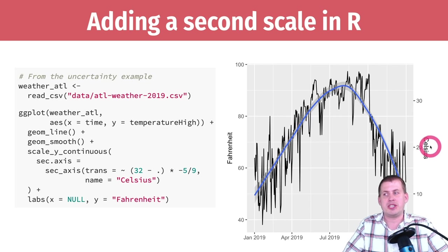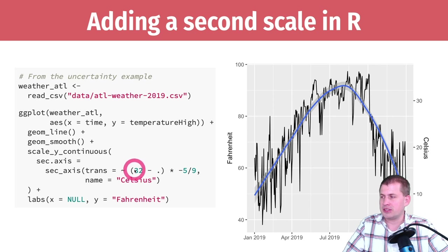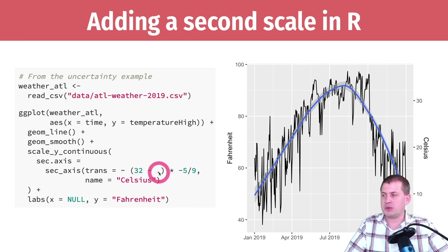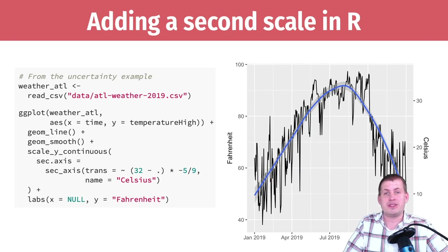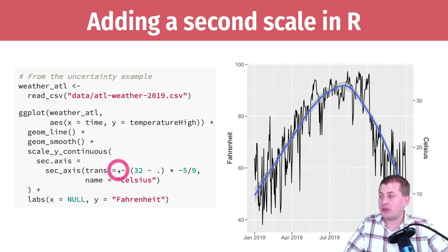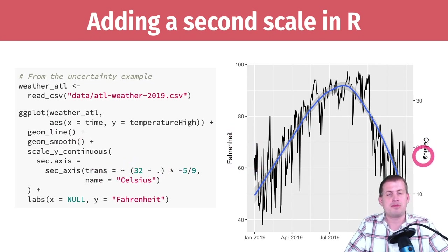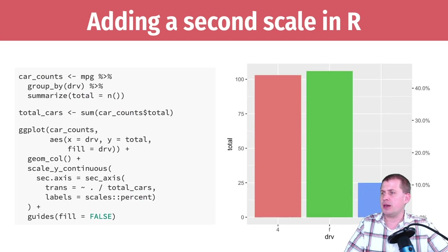In `sec_axis()` you feed a formula. The tilde means formula, so we're taking 32 minus the dot — which is a placeholder for whatever value is in Fahrenheit — times negative 5/9. That's the formula for converting Fahrenheit to Celsius. All it's doing is using this math formula to convert one side to the other numbers. Because of that, it's totally legal and improves readability.